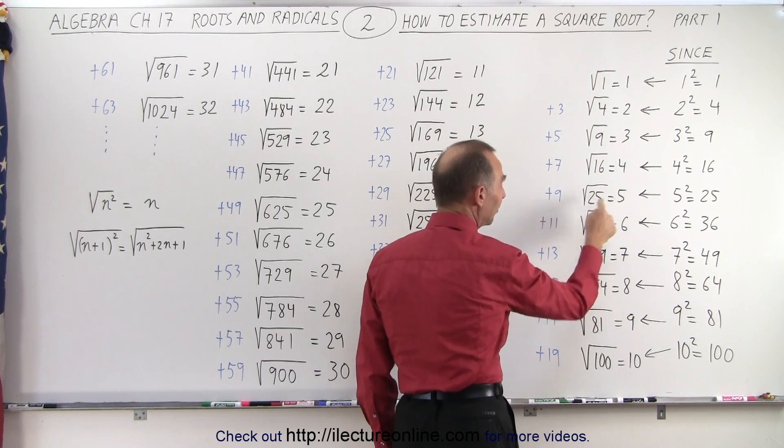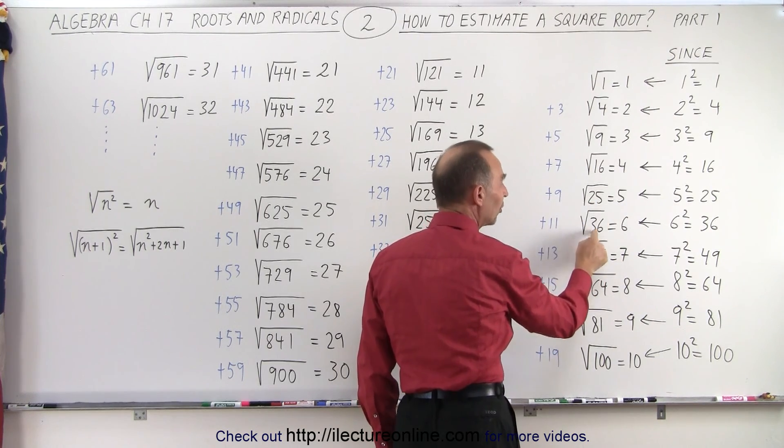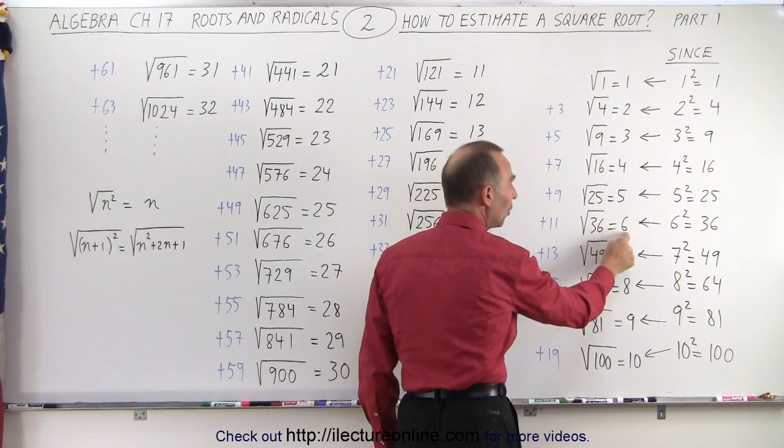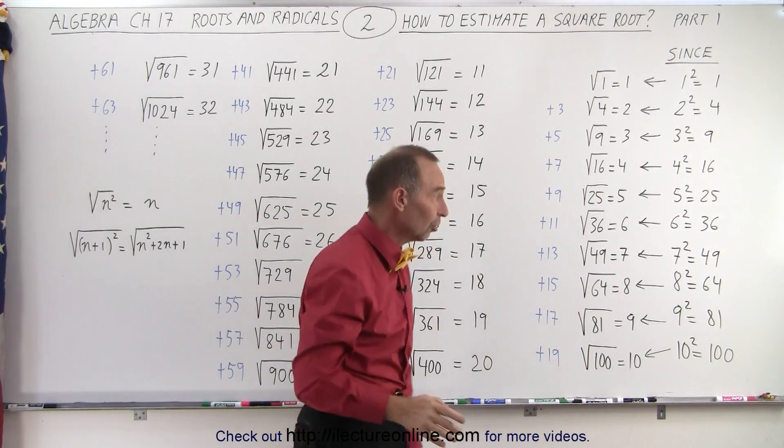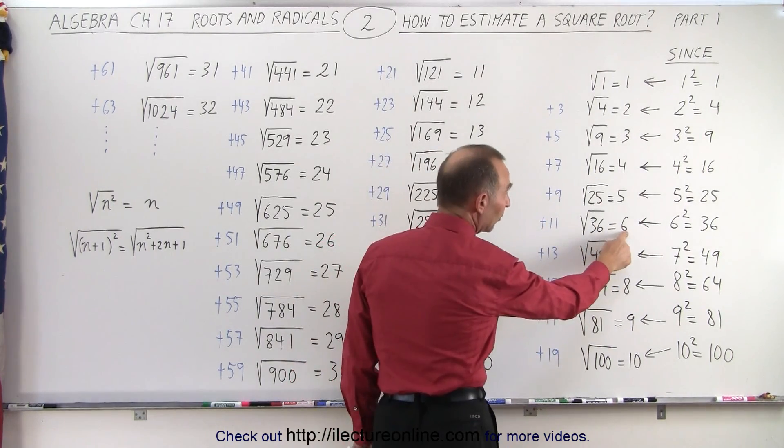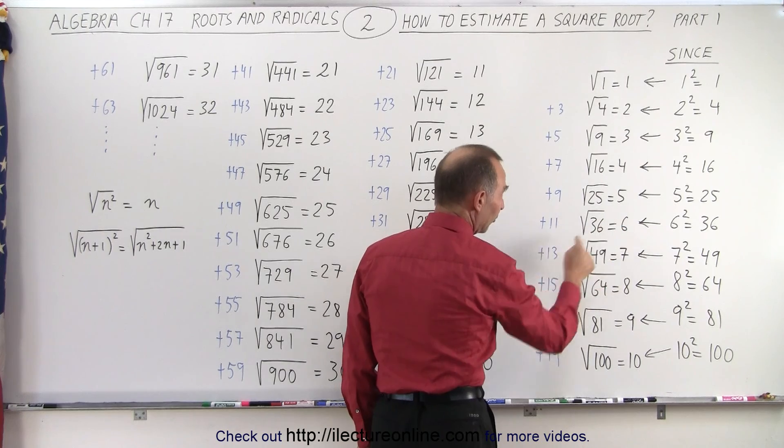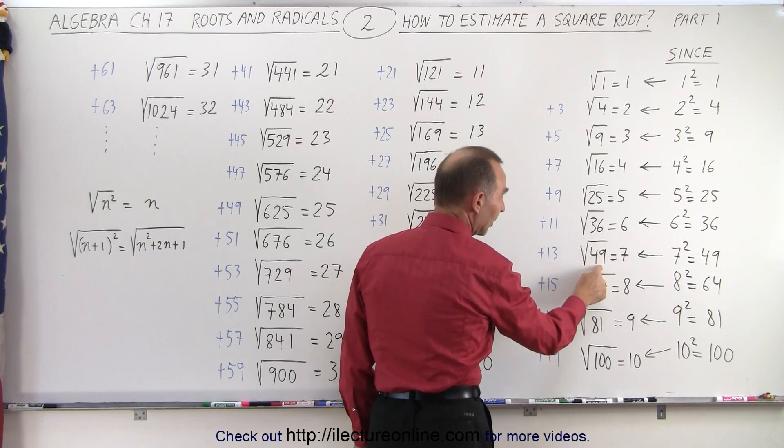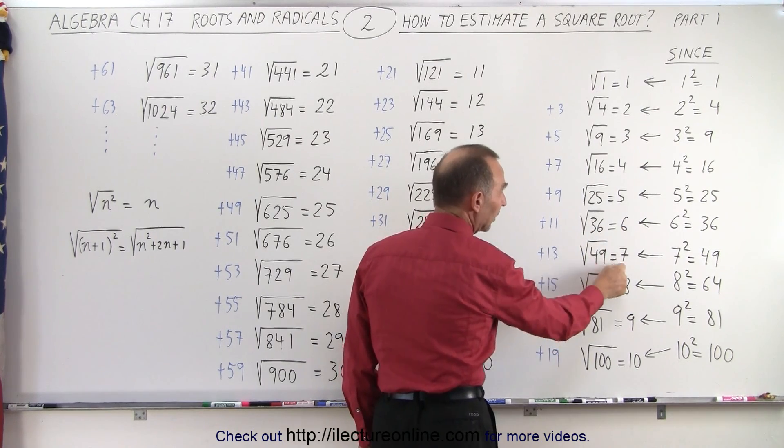We add that to get the next number for which we take the square root, which gives us then the next integer. Again, double 6, which is 12, plus 1 gives us 13. Add that to 36, we get 49. The square root of 49 is equal to 7.